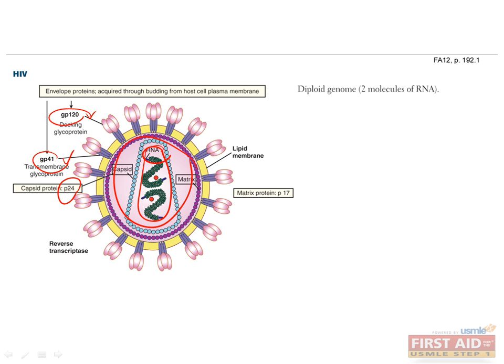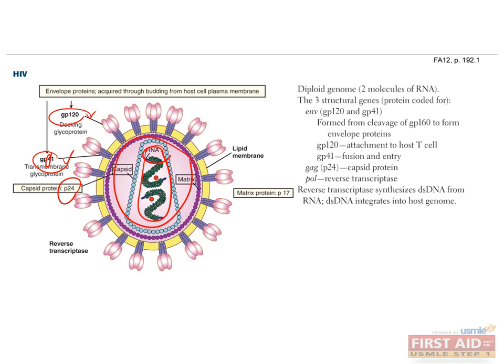It may help to remember that GP41 helps the virus get through the door and into the cell. The HIV genome has three important genes coding for structural proteins: the ENV gene encodes for GP120 and GP41; the GAG gene codes for the P24 capsid protein; and the POL gene codes for reverse transcriptase, which synthesizes double-stranded DNA from RNA. Transmission of HIV can occur through sexual contact, blood transfusions, IV drug use, and contact with other bodily fluids such as plasma and CSF, as well as through the placenta and breast milk.